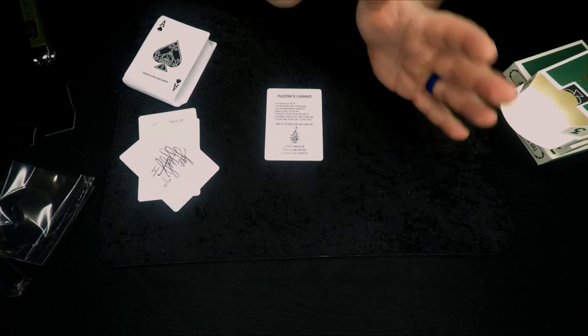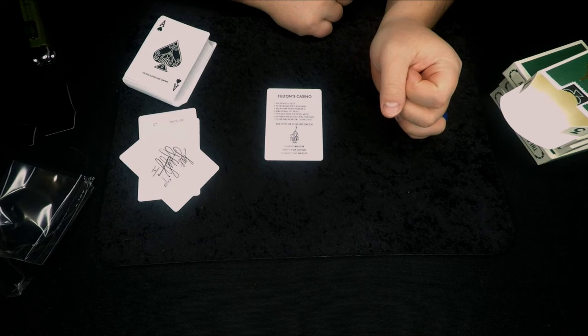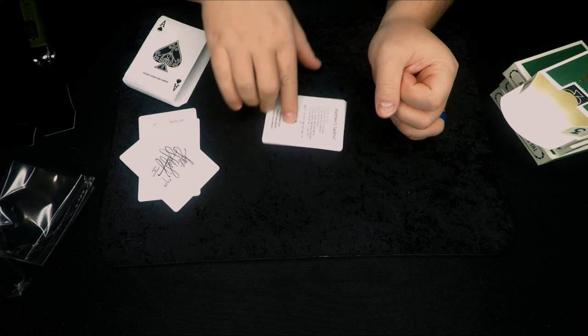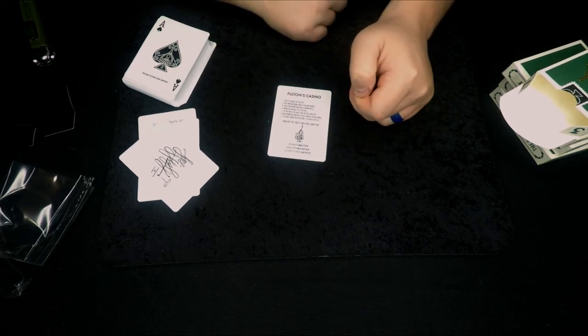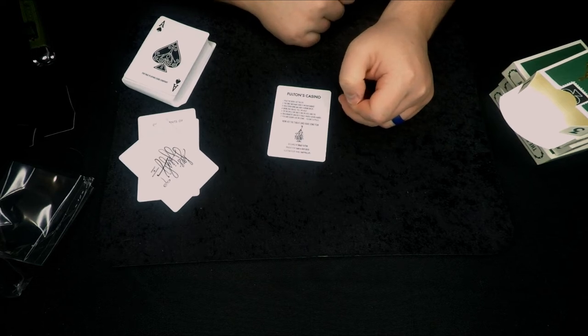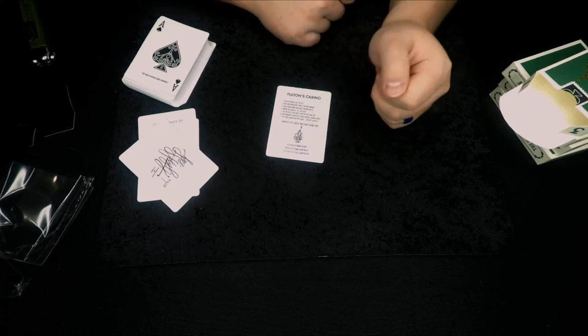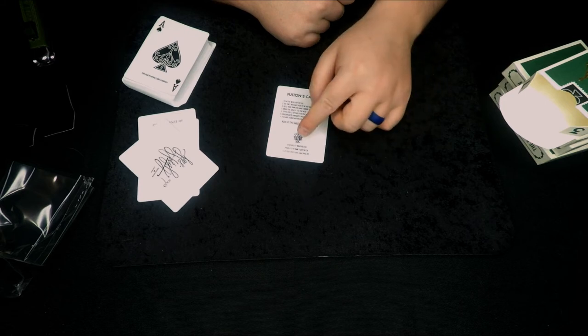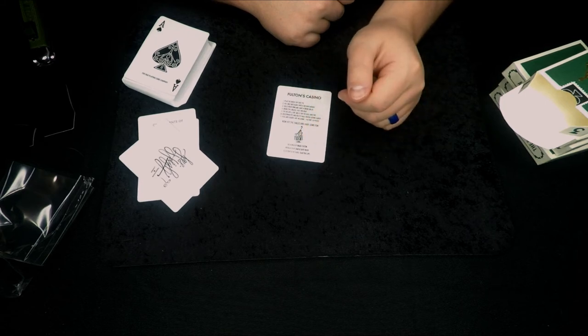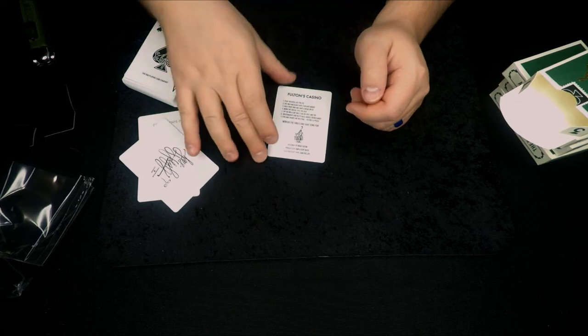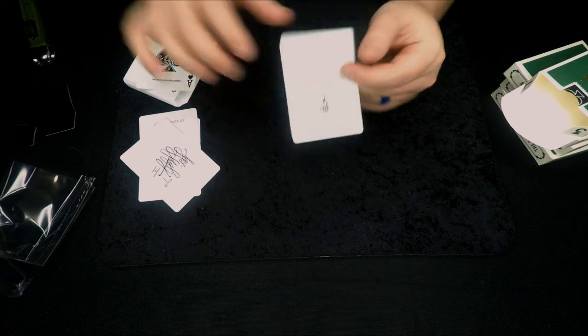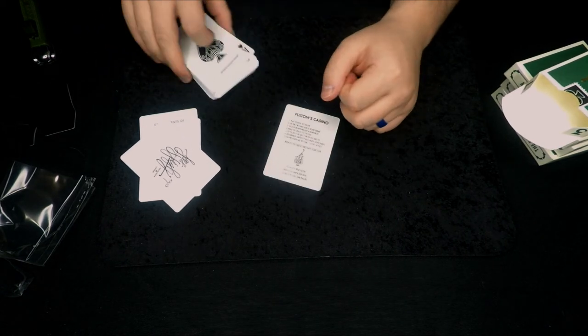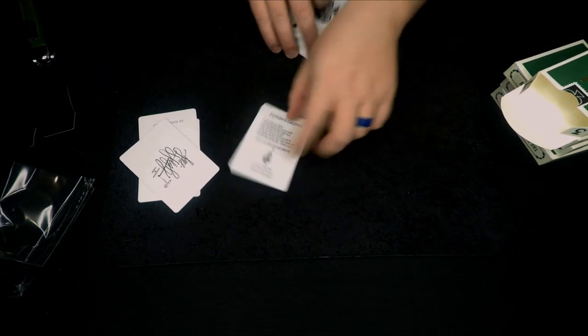Again, reading upside down, bear with me. I apologize. Number seven, fish and shark are welcome. Fulton's a Pisces. Okay. Now hit the tables and have some fun. Ace Fulton's Casino. Designed by Brad Fulton. Produced by Dan and Dave. And illustrated by Dan Phillips. So that's cool. Add card, talks about basically the house rules of the casino. If it actually was a casino.